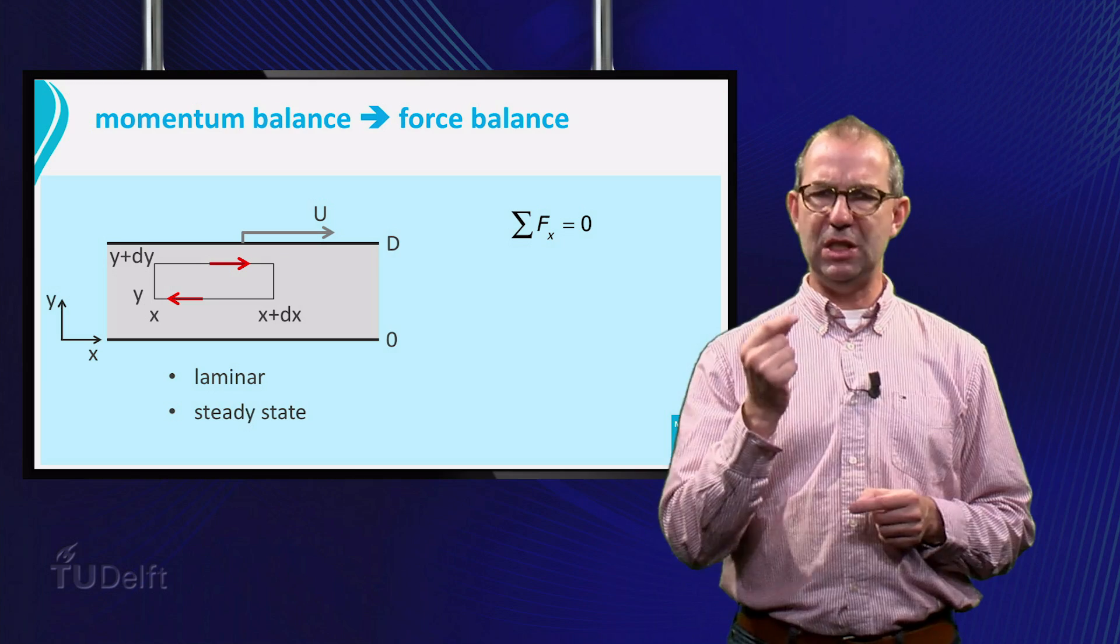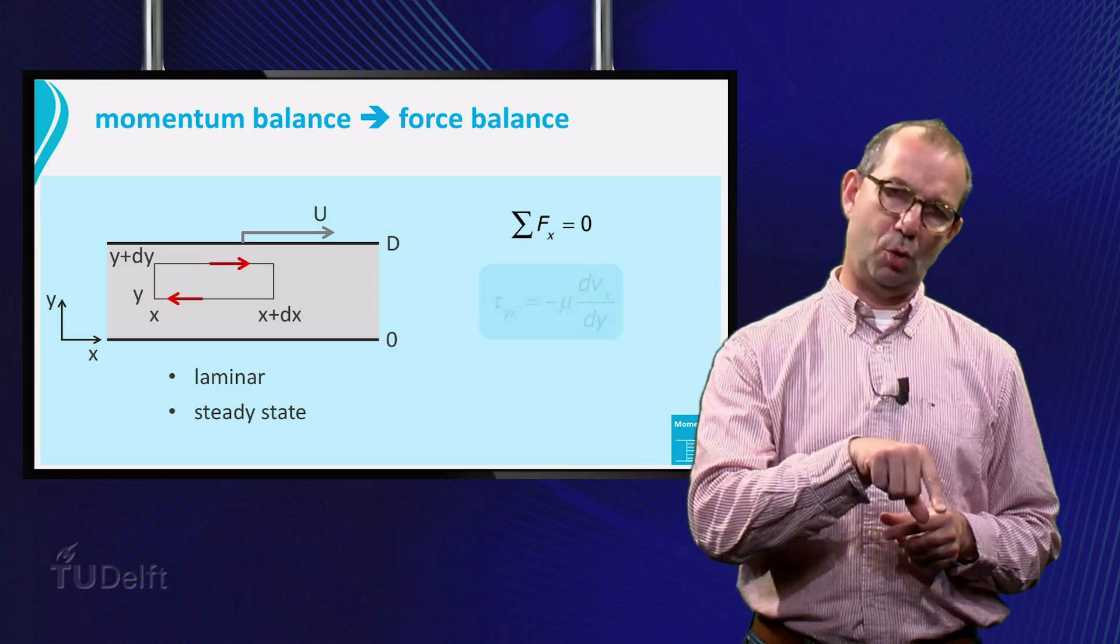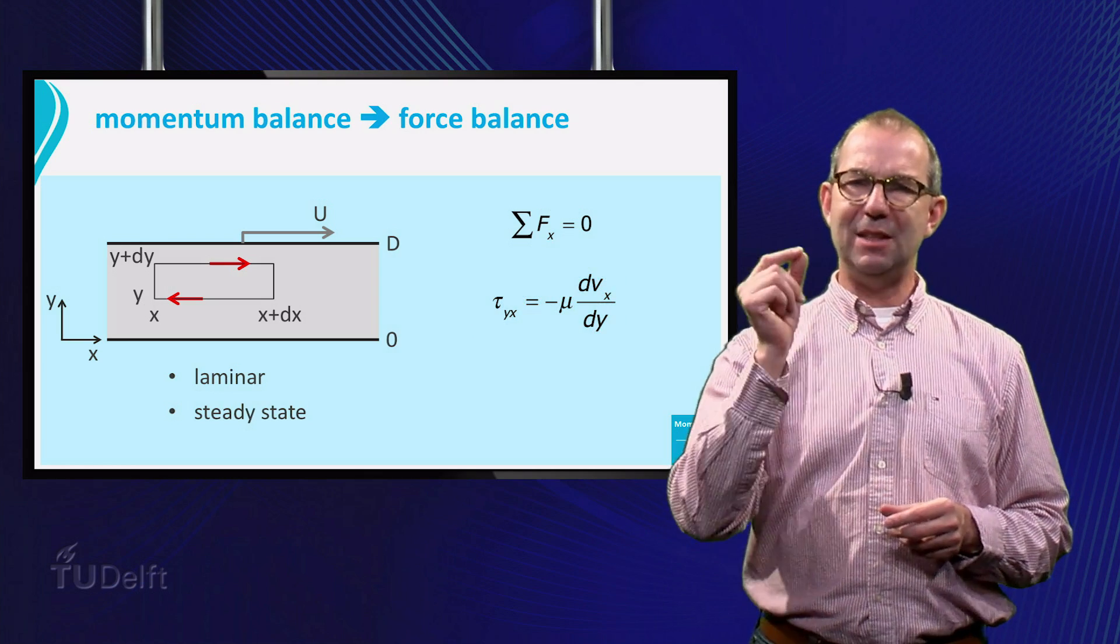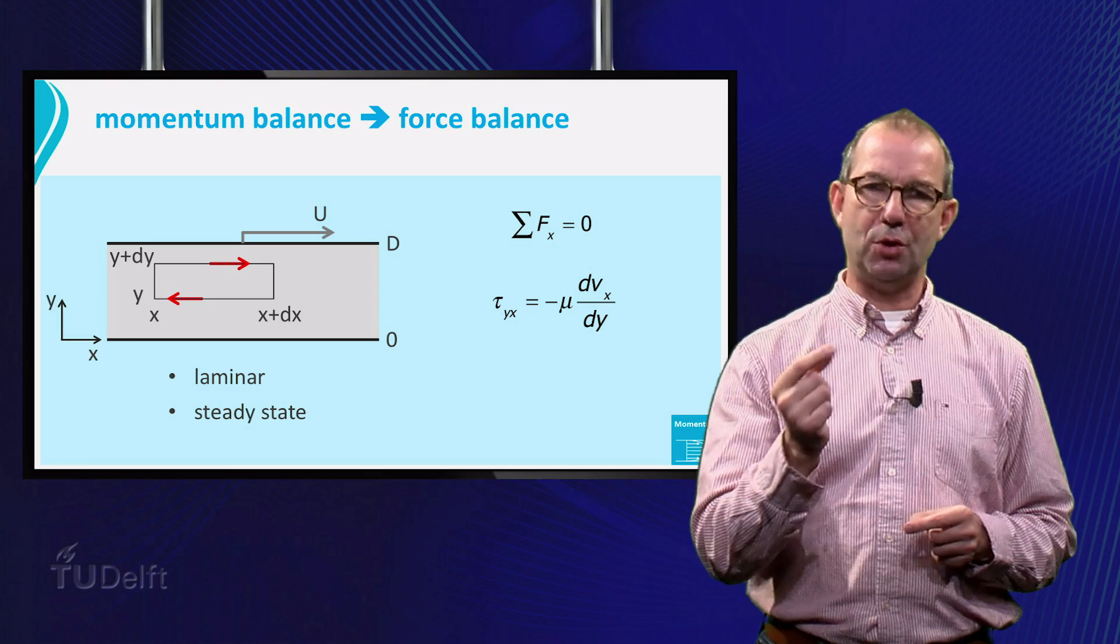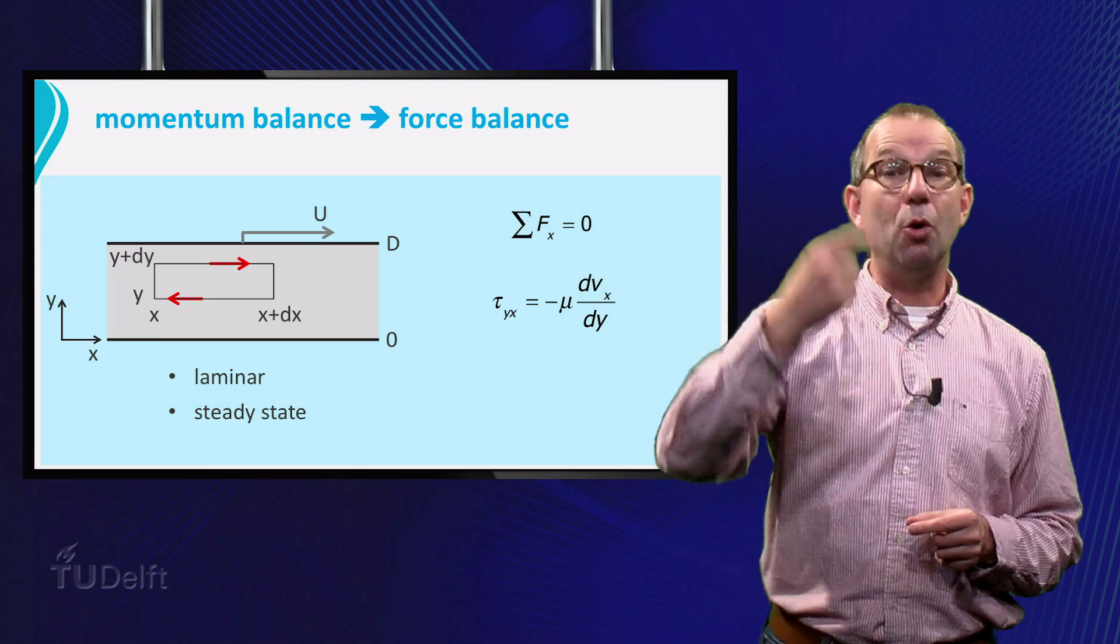Before we continue, we need to be careful. The shear stress is defined as tau equals minus mu dVx dy, and it denotes the friction force of the layer with the smaller coordinate on the layer with the bigger coordinate.